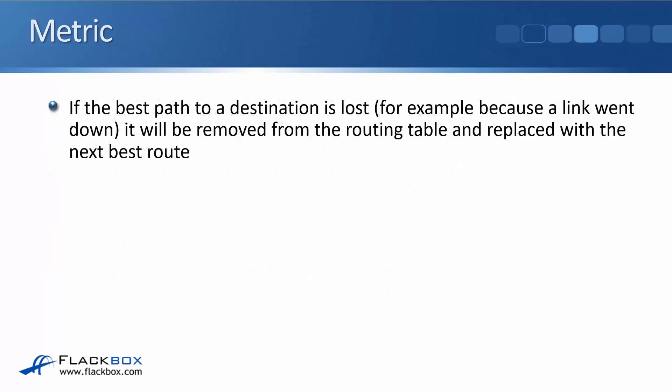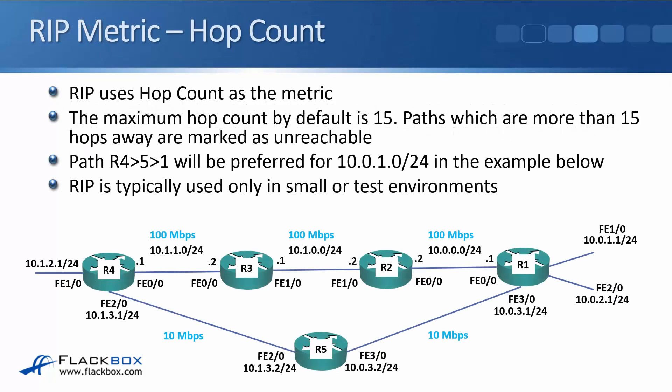If the best path to a destination is lost — for example, because a link went down — it will be removed from the routing table and replaced with the next best route, the one with the next best metric, if one is available. This is a big advantage of dynamic routing protocols: they're self-healing. If anything changes on the network, the routing tables will be updated to reflect that. Now let's look at the different metrics used by our different routing protocols, starting off with RIP, the Routing Information Protocol.